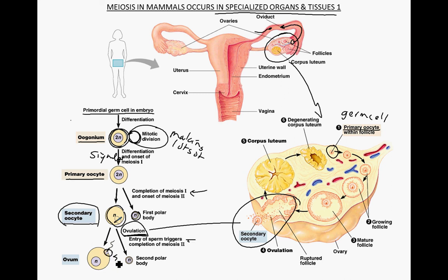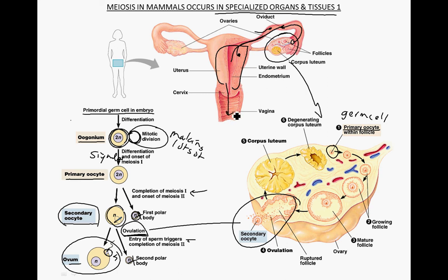The haploid sperm cell fuses with the haploid egg cell, and you get the fertilized egg. The polar bodies end up disintegrating and dying. If sperm are present in the oviduct when the secondary oocyte is ovulated, there is potentially fertilization. That fertilized egg continues down and implants on the wall of the uterus. If there is no sperm, there is no fertilization, it won't implant, and the uterine wall is shed in menstruation — this happens in human females on a monthly basis.